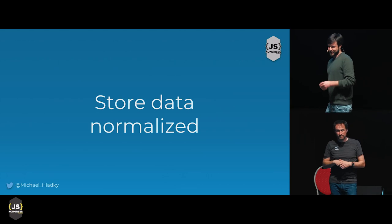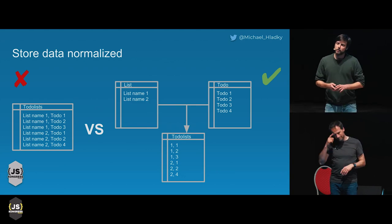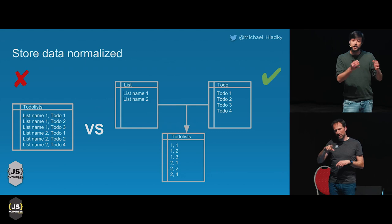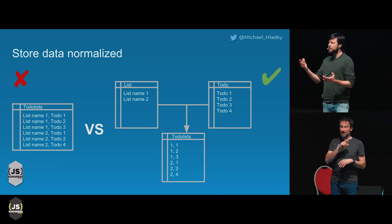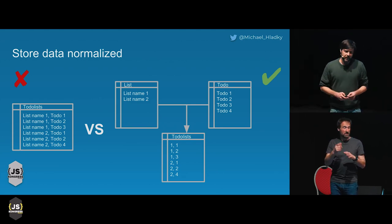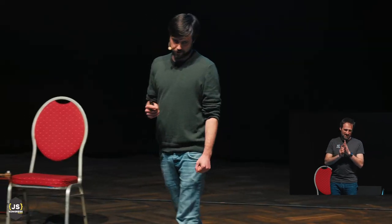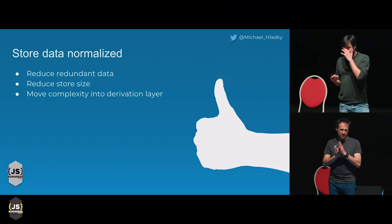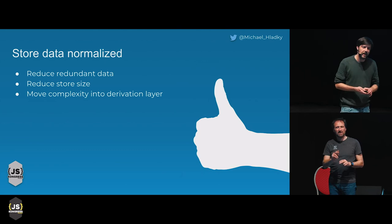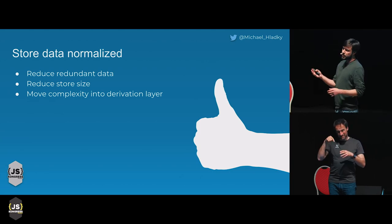Store data normalized. A lot of folks know what a NoSQL database is and what a relational database is. In the backend it may be profitable to use NoSQL databases because they are super fast. However, in the frontend it is a pain to have redundant data. What you do is try to normalize your data structures — this is why I say store data normalized. It will reduce redundant data, reduce the store size, and move the complexity from your store to your derivation layer, which I will talk about later.